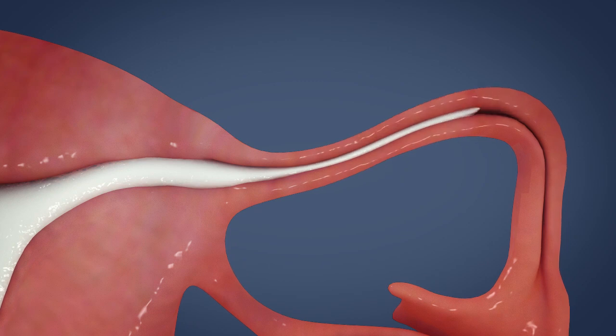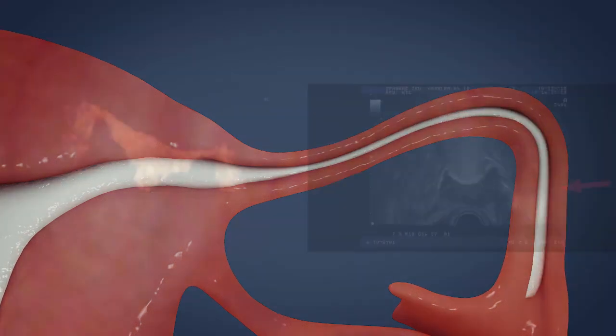In a healthy fallopian tube, the gel foam will run through the tubes and the fallopian tubes will be visible during the ultrasound procedure.